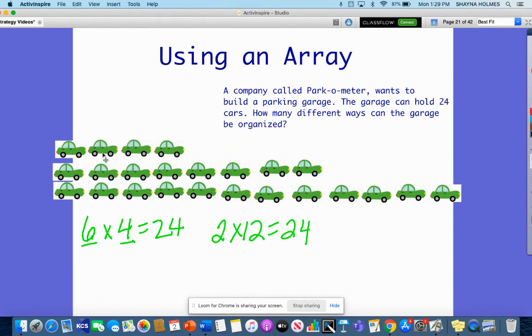How many would be in each row if I had three and I wanted to use all 24 cars? Let's see, three rows of one, two, three, four, five, six, seven, eight.